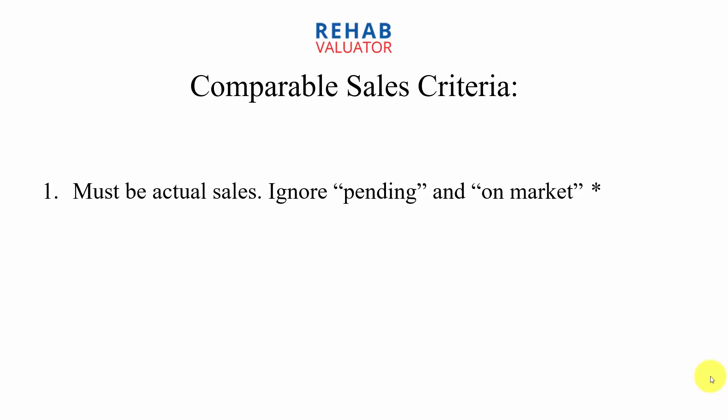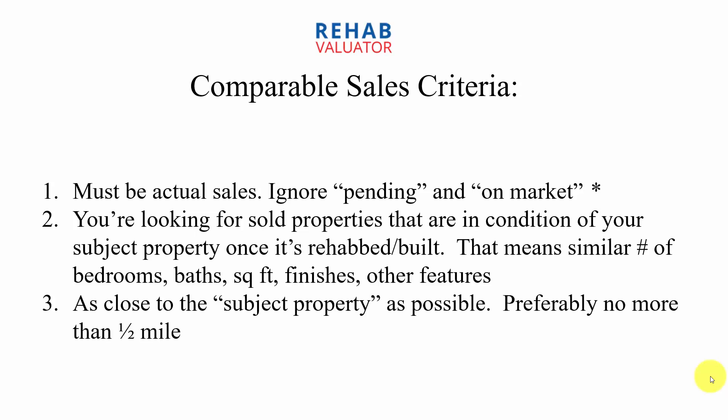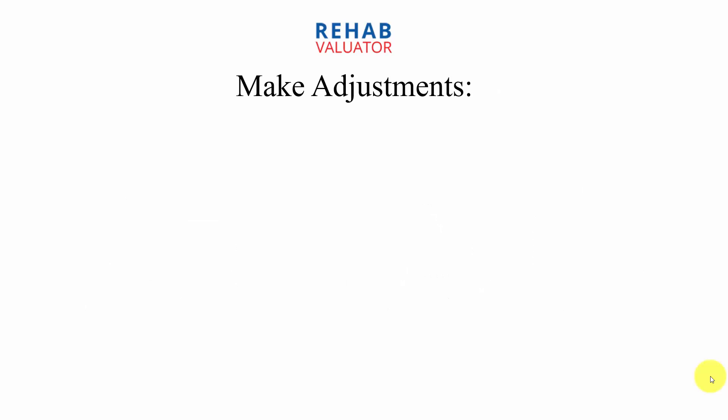If I have a house I think is going to be a really nice flip and I'm thinking of listing it for $400,000, I look on MLS, Zillow, or Trulia, and there are a lot of houses listed in a similar area in similar condition for $400,000 and they're not selling — I might rethink my listing price. You're looking for sold properties that are in the condition of your subject property once it's rehabbed or built. That means similar number of bedrooms, baths, square feet, finishes, and other features. You want them to be as close to the subject property as possible, preferably no more than half a mile. If you're in a dense area you may use a smaller radius; if you're in a rural area, a wider radius.